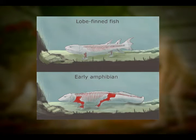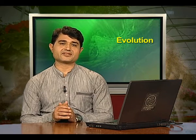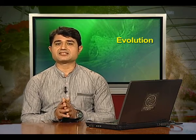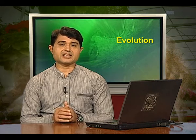These animals, called lobe-fins, evolved into the first amphibians that lived on both land and water. No specimens of these remain today; however, they were ancestors of modern-day frogs and salamanders. The amphibians evolved into reptiles, which had thick-shelled eggs that do not dry up in the sun, unlike those of amphibians.